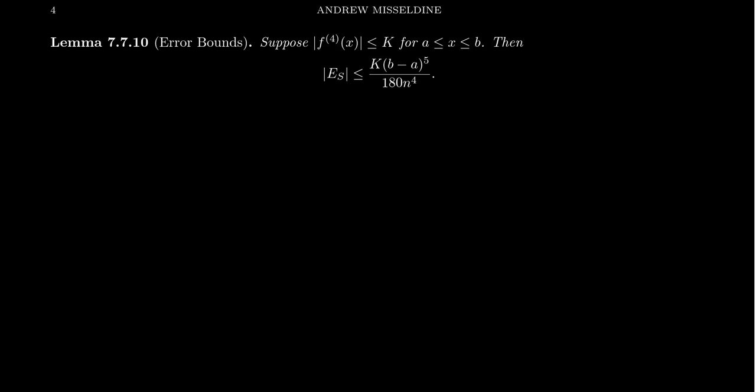So this error bound is actually going to predict that Simpson's rule is going to be much more accurate in general than the trapezoid rule and the midpoint rule. And so if we compare this to what we've seen before in a previous slide, we were looking at the integral from 1 to 2 of 1 over x dx. And we know this is equal to the natural log of 2.